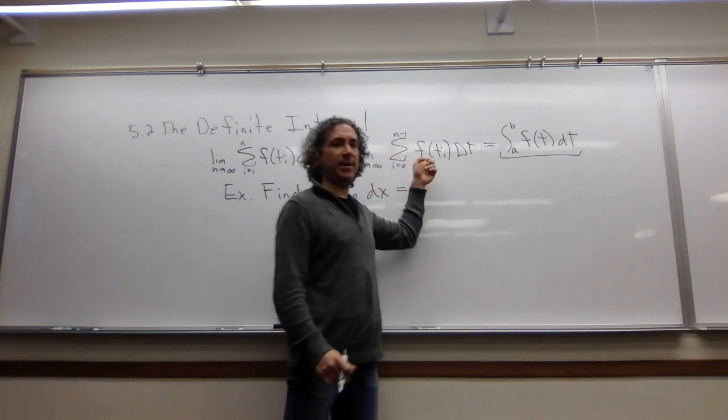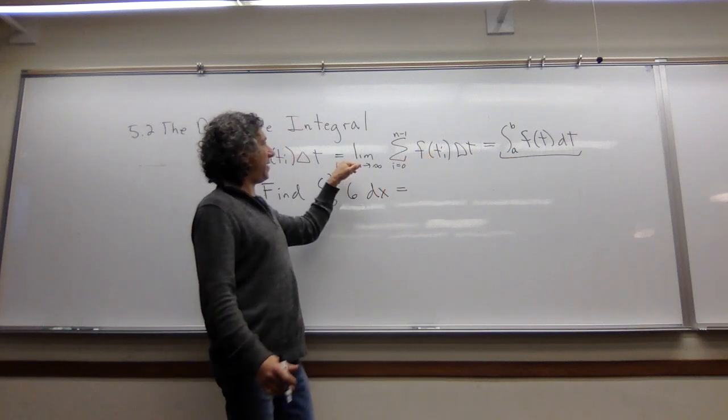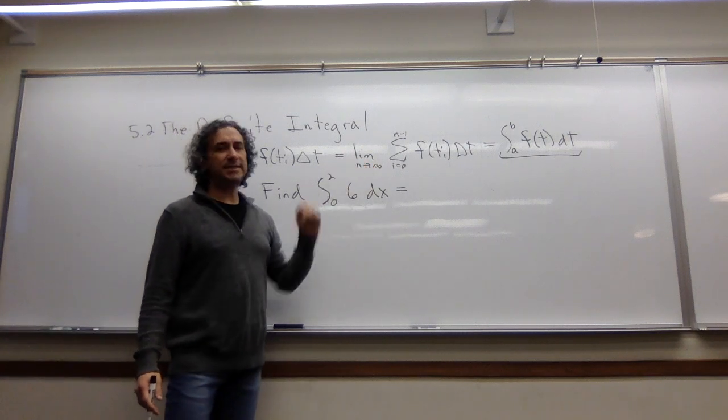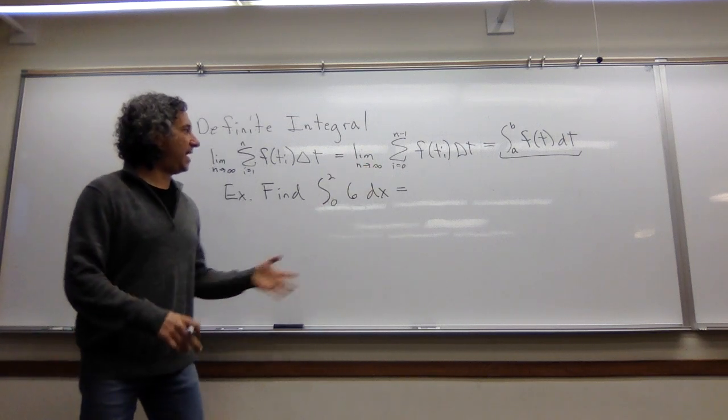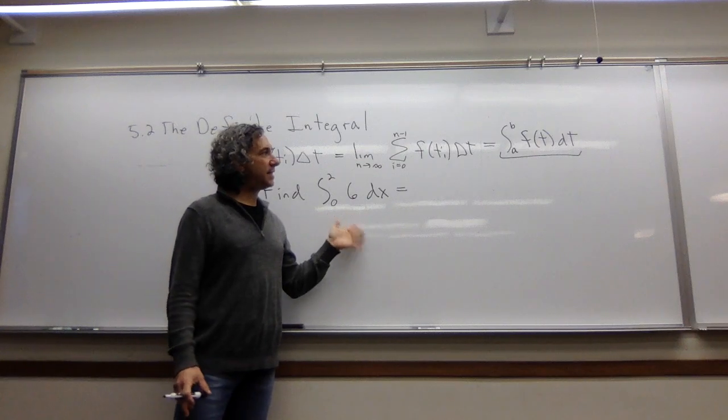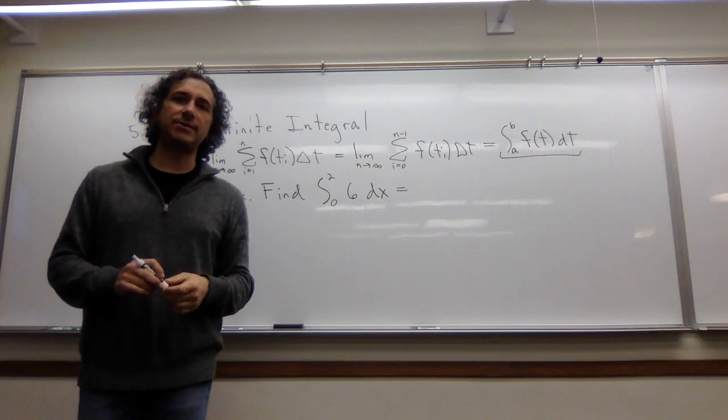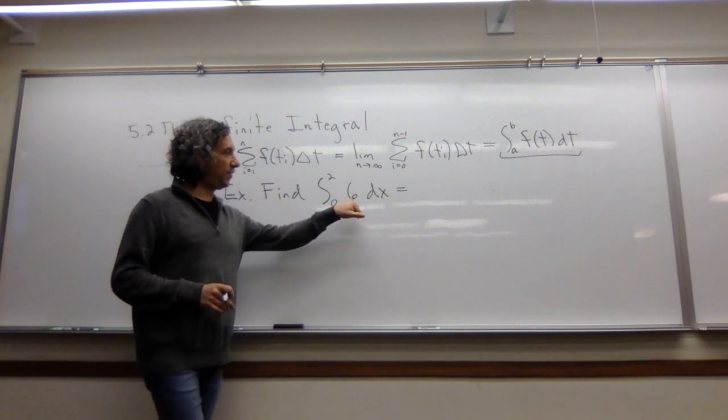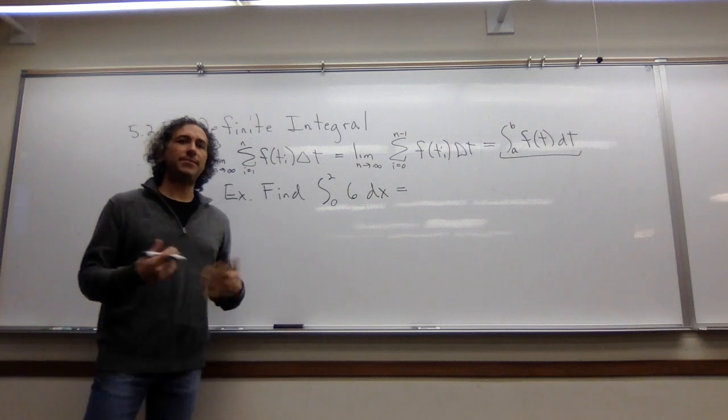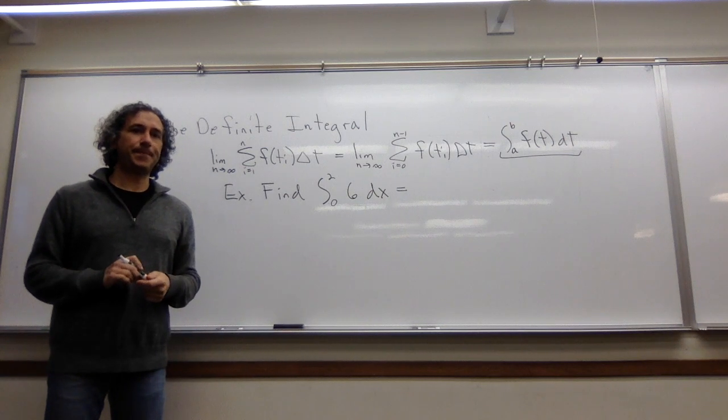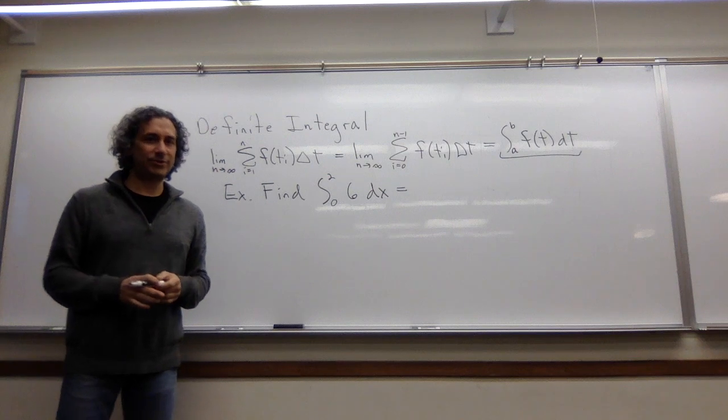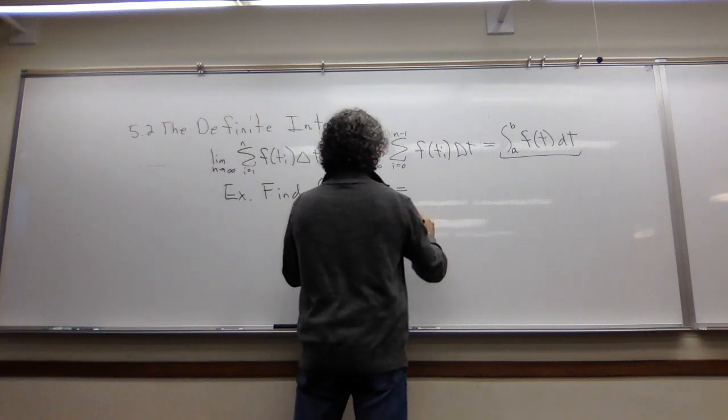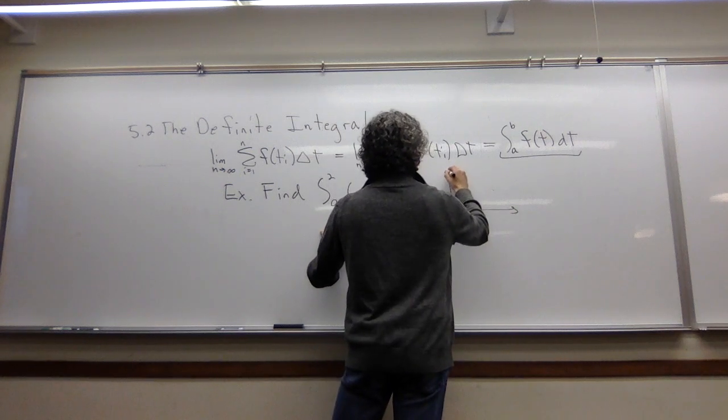Let's find the integral from 0 to 2 of 6 dx. What I'd like you to do now is actually pause the video and see if you can solve this question. This is the same thing as this limit. And you might say to yourself, that's crazy. How am I going to do that limit? Instead of thinking of it as a limit, remind yourself that this is giving me not just a total distance traveled, but also an area. So think of this in terms of an area where this is your function.